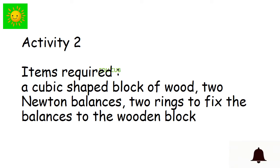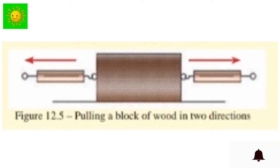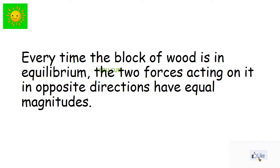In the second activity, we need a cubic-shaped wooden block, two newton balances, and two rings to fix the balances to the wooden block. Fix the two rings to the centers of two opposite faces of the block, attach the two newton balances to the rings, and pull the block in two directions applying forces of various magnitudes. You will observe that the block moves whenever there is a non-zero resultant force. Every time the block is in equilibrium, the two forces acting on it in opposite directions have equal magnitudes.